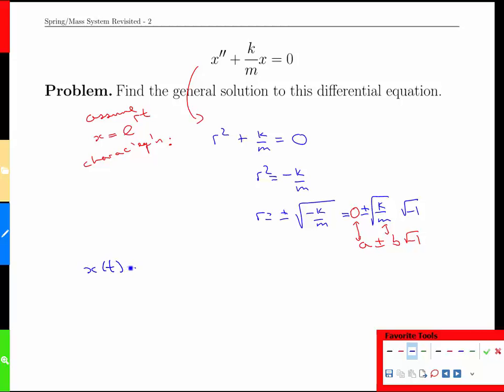And immediately because of our experience solving these kinds of equations and interpreting what these r values mean for us, we can write x right now as some combination of e to the zero t times cos of square root of k over m times t plus c2 e to the zero t sine square root of k over m t.